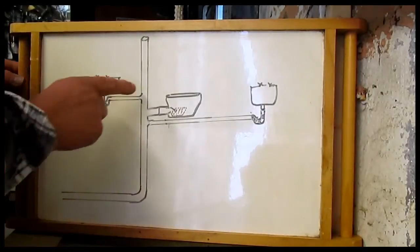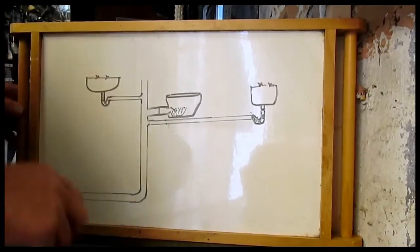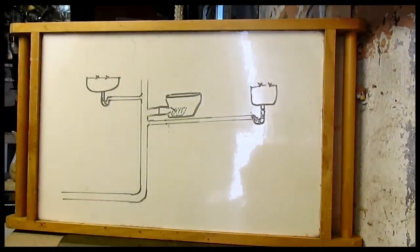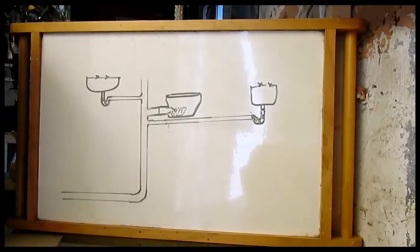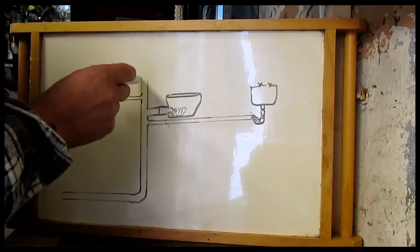Now a durgo valve is a valve that you can put on your soil pipe. It's shaped a bit like that.